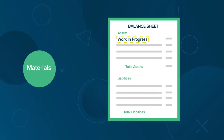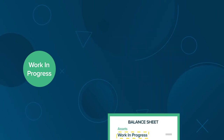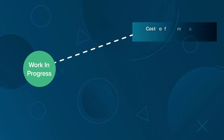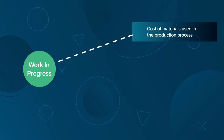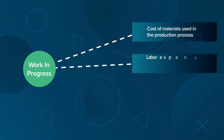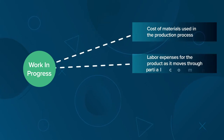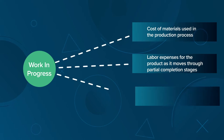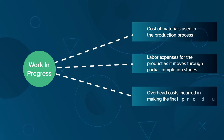WIP is calculated as a sum of the following three elements used to fashion a product or service: the cost of materials used in the production process, labor expenses for the product as it moves through partial completion stages, and overhead costs incurred in making the final product.